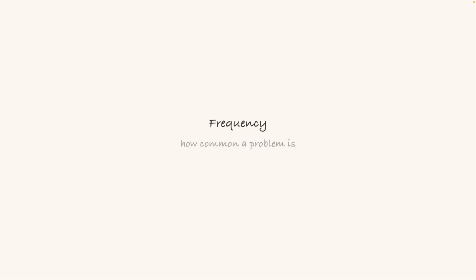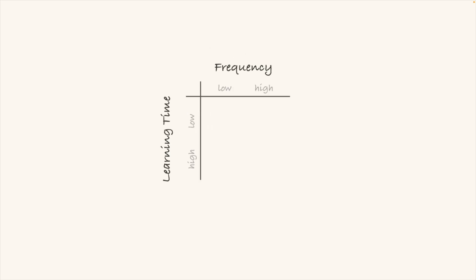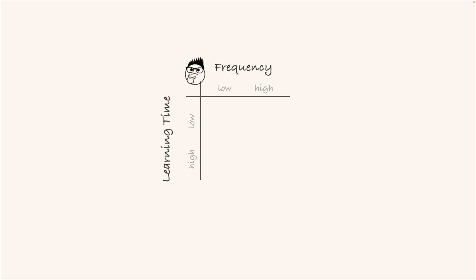If you do this right, you can be well equipped for interviews within a month or two. For data structure and algorithm patterns, we should value them based on two criteria. The first is frequency — how common a problem is in coding challenges or interviews. The second is learning time — how much time and effort you need to be proficient in a pattern. Learning time is not spoken about enough, but it's absolutely critical to finding a job in a reasonable amount of time. If you actually value your time and have a deadline for when you want to interview and land a new job, you need to focus on patterns that are low learning time but high frequency.